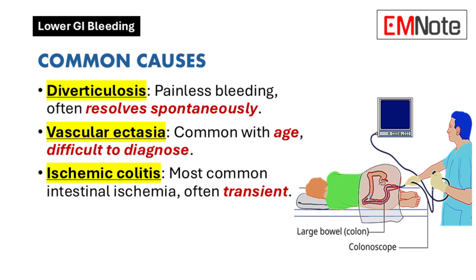Vascular ectasias, including arteriovenous malformations and angiodysplasias, represent another cause of bleeding and may occur in the colon or small intestine. Diagnosis is often challenging, as their development is a chronic process that becomes more common with advancing age.